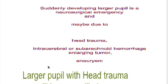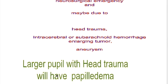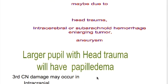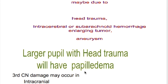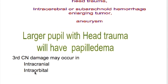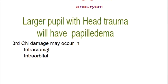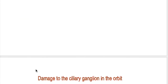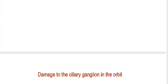A suddenly developing large pupil is a neurological emergency and may be due to head trauma, intracerebral or subarachnoid hemorrhage, an enlarging tumor, or an aneurysm. A large pupil with head trauma will have papilledema and other signs of central nervous system involvement. Oculomotor nerve damage may occur intracranially or intraorbitally; damage to the ciliary ganglion in the orbit causes acute pupillary dilatation.